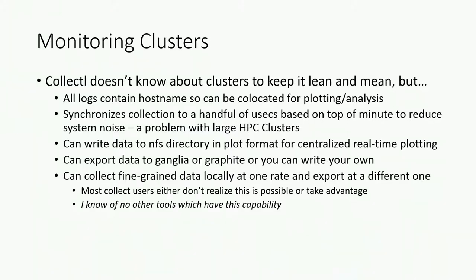The only problem is — if you use Ganglia, it uses this thing called RRD tool for plotting the data. And if you look at the data it plots, you're going to find out that it lies. What it will do is take your data and normalize and munge it. Depending on how zoomed in or zoomed out you are, you might have one data point representing an hour — the average over that hour. So you're looking at the plot and see your network is low, no big deal. But if you zoom in to 10 minutes, your network load is up to 50%. Zoom in to one minute and it might be 90%. As soon as I found that out, I said I'm not going to use it for any of my graphing because I demand accuracy.